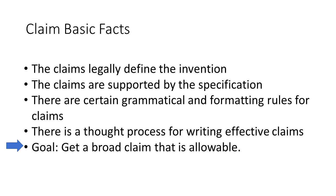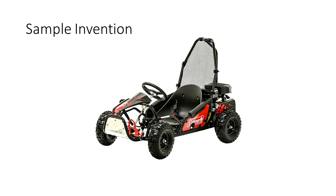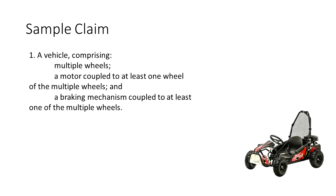If you need more information on how claims work, I have a video that covers the basics and I'll put a link in the description. After you pass your test to become a patent professional, it is common to take workshops on claim writing, and often they'll start with an example invention — something like this. Congratulations, you've invented the go-kart. Students are asked to write a claim, and you might start with something like: a vehicle comprising multiple wheels, a motor, a steering mechanism, and a braking mechanism. Note that this claim and all examples in this video are not intended to be real claims — we are taking shortcuts to illustrate the thought process while keeping technical details simple.